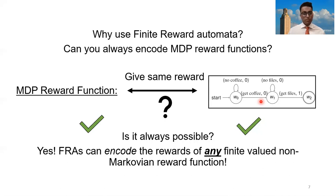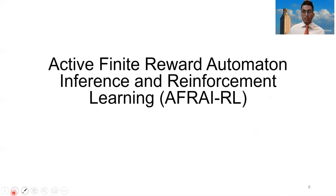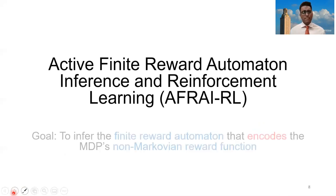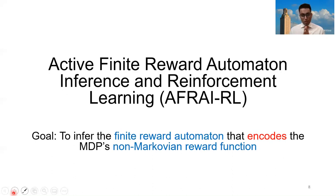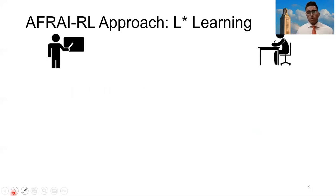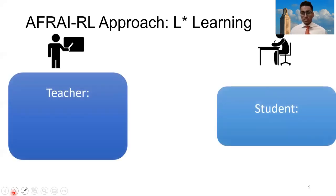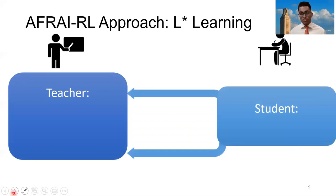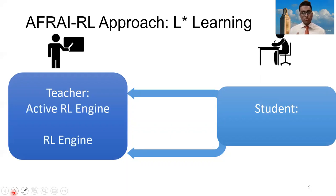We've now concluded talking about finite reward automatons and can move on to our algorithm. Our algorithm's goal is to infer a finite reward automaton that encodes the MDP's non-Markovian reward function. The basis for our approach is LSTAR learning, a technique developed by Angluin in 1987. In this approach, there are two systems — a teacher and a student. The job of the student is to learn from the teacher by asking questions. In our scenario, the teacher consists of two reinforcement learning engines, both of which perform Q-learning. The student is called the inference engine.